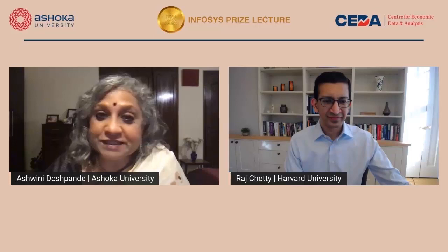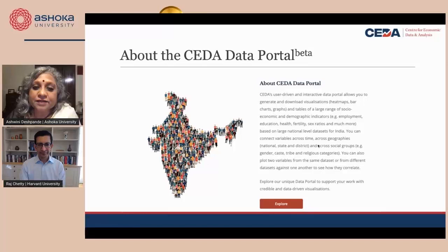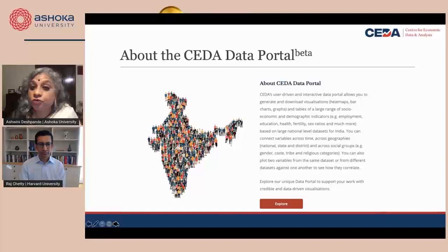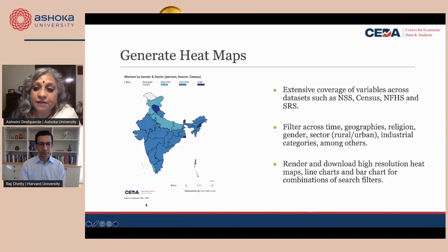The Opportunity Atlas that Raj Chetty and his colleagues have established is what we want to be when we grow up. We are obviously not there yet, but I'm going to show you a few glimpses of what the data set is going to look like. Basically, it's a user-driven and interactive data portal that allows users to generate and download visualizations — heat maps, bar charts, graphs, et cetera — on a large range of socioeconomic data compiled from different publicly available data sources. Users can make connections across data sets, across geographies, across time, and across social groups.